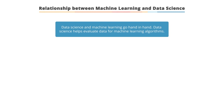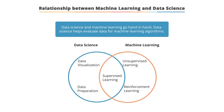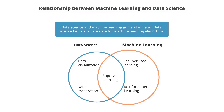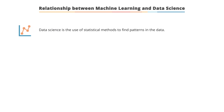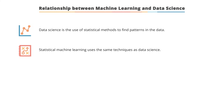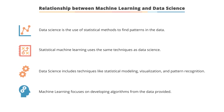Data science and machine learning go hand in hand. Data science helps evaluate data for machine learning algorithms and covers the whole spectrum of data processing, while machine learning handles the algorithmic or statistical aspects. Data science uses statistical methods to find patterns, and includes techniques like statistical modeling, visualization, and pattern recognition, while machine learning focuses on developing algorithms from data to make predictions.